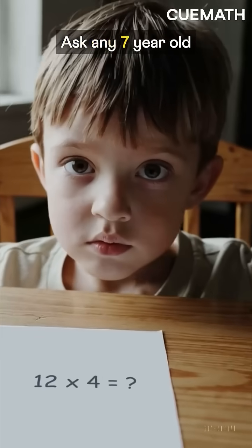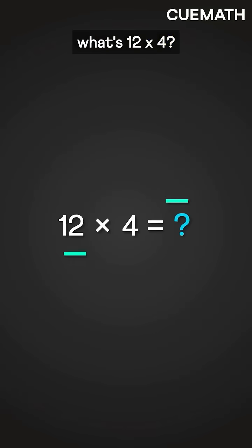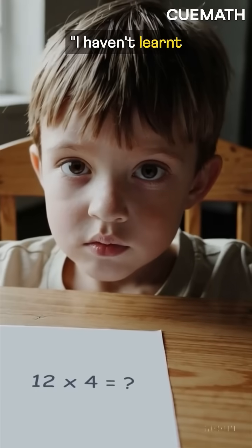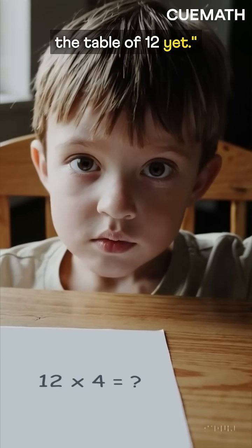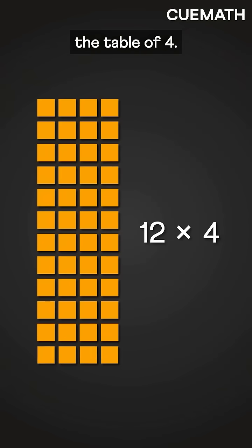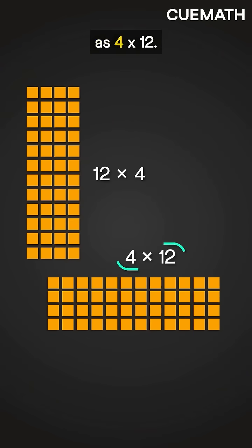Ask any 7-year-old what's 12 times 4 and they would say, I haven't learnt the table of 12 yet. But they do know the table of 4. They just don't realize that 12 times 4 is the same as 4 times 12.